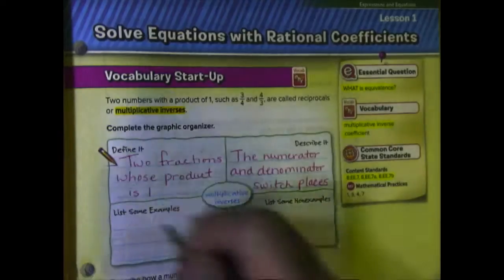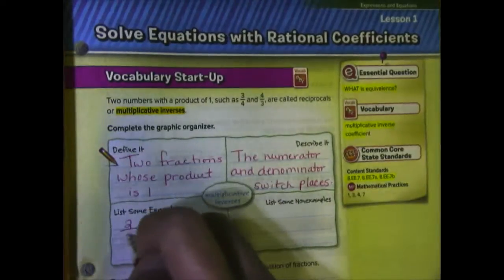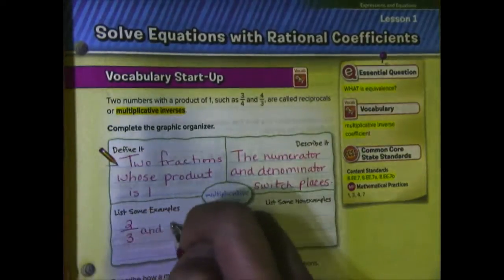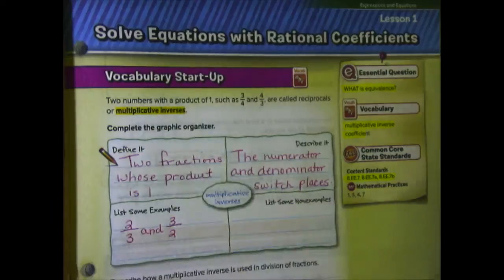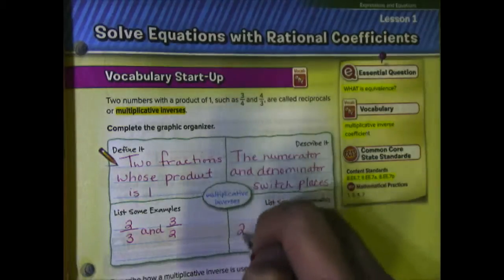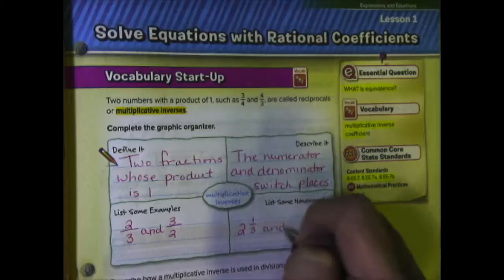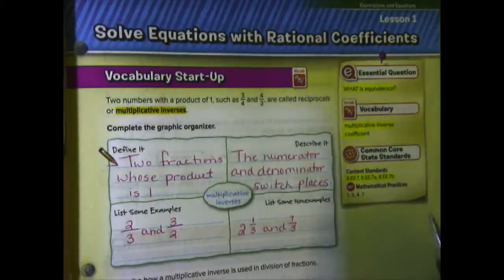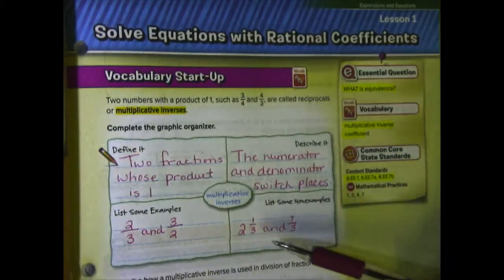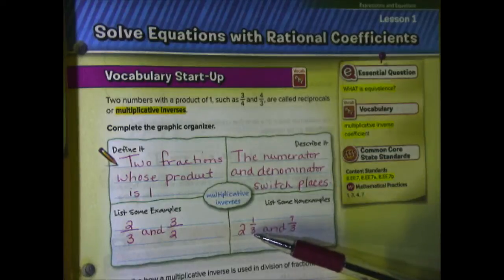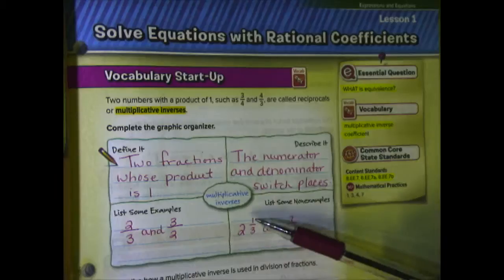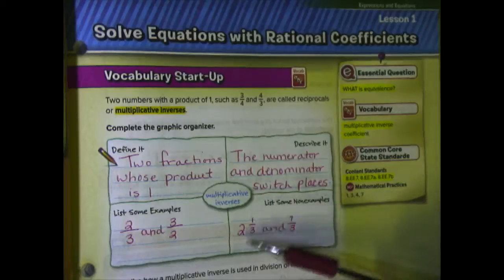For some examples: if we had two-thirds, the multiplicative inverse or reciprocal would be three over two — we just flip it. For non-examples, something that would not be a multiplicative inverse: if I took two and one-third and seven-thirds, those are not reciprocals or multiplicative inverses. Because if I change this mixed numeral to an improper fraction, 3 times 2 is 6, plus 1 is 7 — seven-thirds and two and one-third are the same number, so they're not reciprocals.